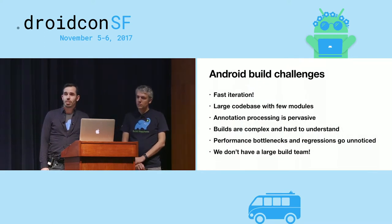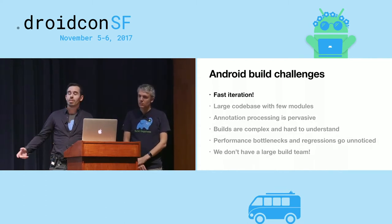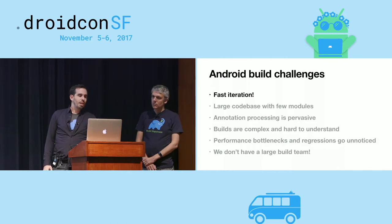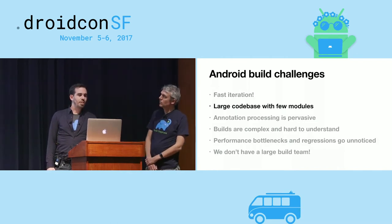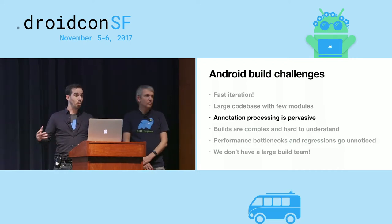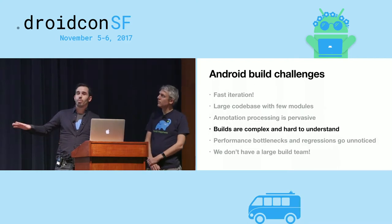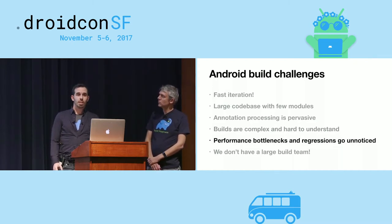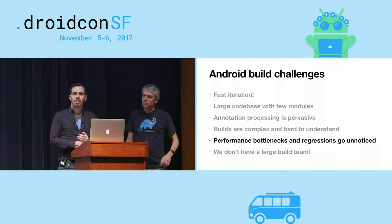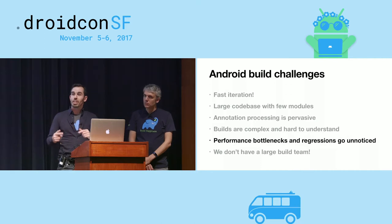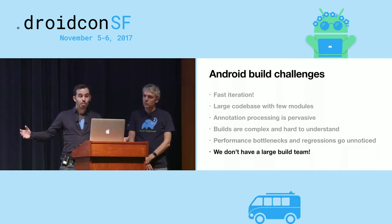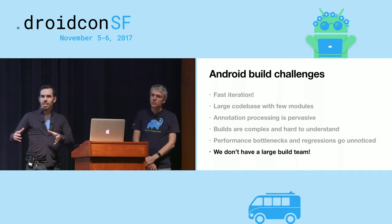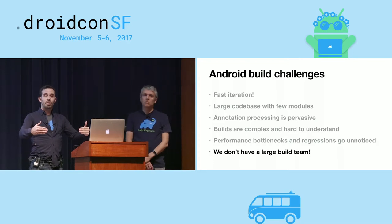We have a number of challenges that are unique to Android. Fast iteration — we're shipping a new release every week, so we just can't wait. We can't stop to rebuild our build system. Large code base with few modules. Annotation processing is pervasive, meaning code size blows up very quickly. Builds are really complex and hard to understand — who knows what's going on with hundreds of tasks running in parallel. Performance bottlenecks and regressions go unnoticed. And we don't really have a huge build team — one person part-time on Android. So we really can't afford to build a lot on top of existing tools.